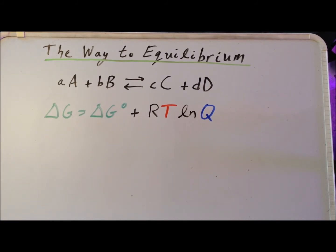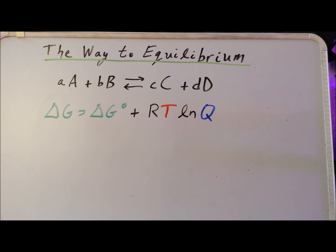Here we have the relationship between the Gibbs energy ΔG and the standard Gibbs energy ΔG°. One way to interpret ΔG° is that it is what ΔG would be for the given reaction if the concentrations of A, B, C, and D were all identically equal to one. From this particular expression, we can actually derive a very important thermodynamic result.